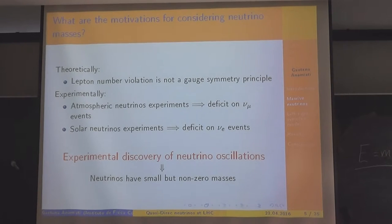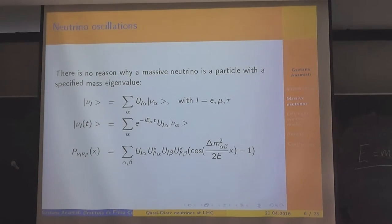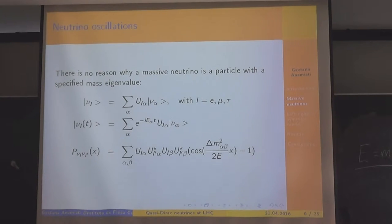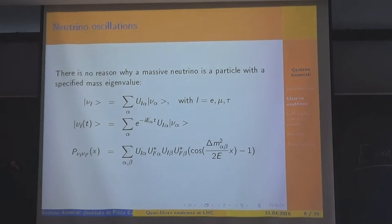This is because of neutrino oscillations — a neutrino can oscillate into another neutrino with a different flavor, and this is possible only if neutrinos have mass. There is no reason why a massive neutrino is a particle with a specified mass eigenvalue; a flavor eigenstate is a superposition of mass eigenstates. Here the flavor eigenstates are called nu_alpha. U is the mixing matrix that relates the two bases. The last equation gives the probability that a neutrino with flavor L oscillates into another neutrino with flavor L-prime, which is proportional to the cosine of the mass-difference squared.